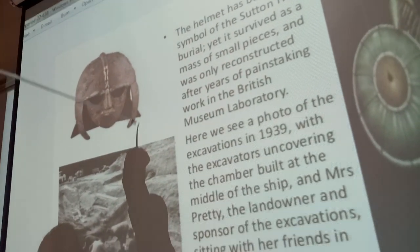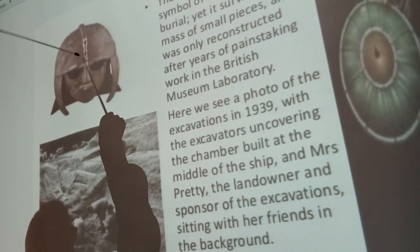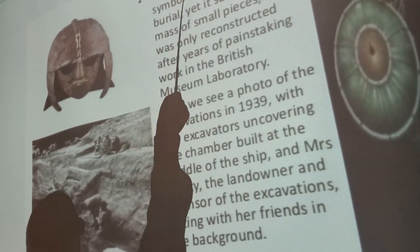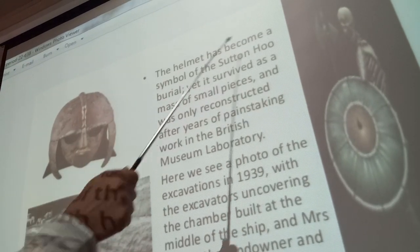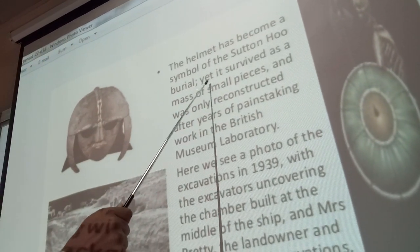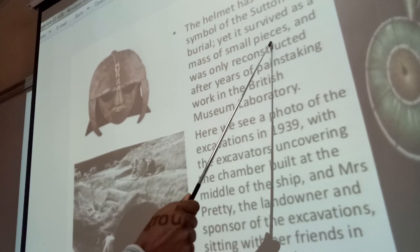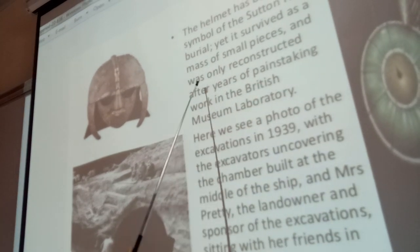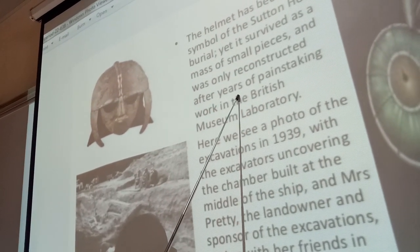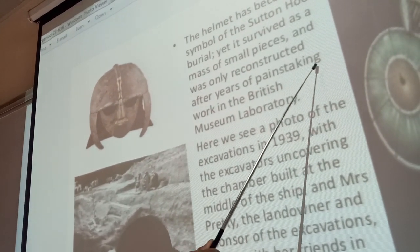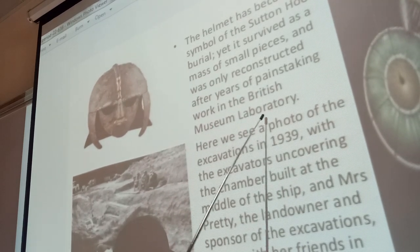The helmet: people wore helmets. The helmet has become a symbol. It survived as a mass of small pieces and was only reconstructed after years of painstaking work in the British Museum laboratory.